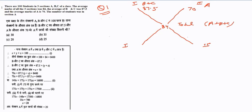Now, applying the allegation method: first divided by second. We calculate 87.5 minus 84, which equals 3.5. Then 84 minus 70, which equals 14. This gives us the ratio 3.5 to 14. This is a ratio, not the actual quantity.